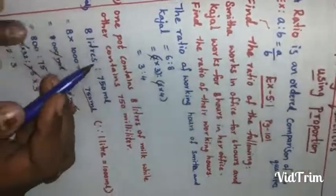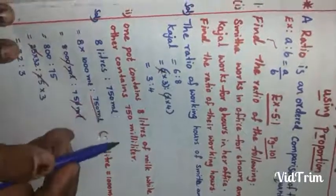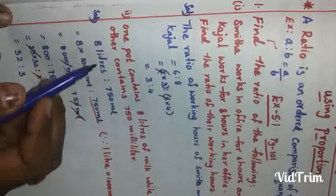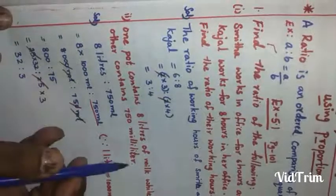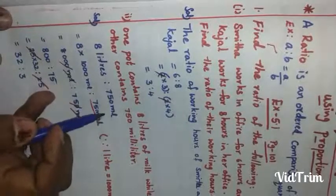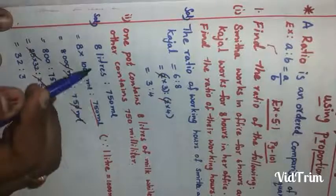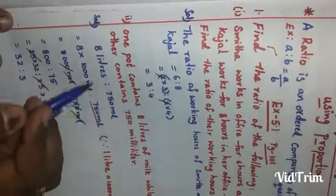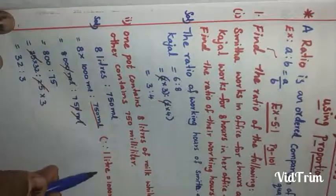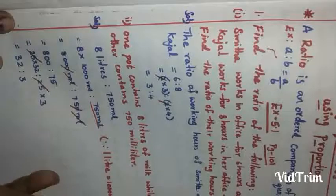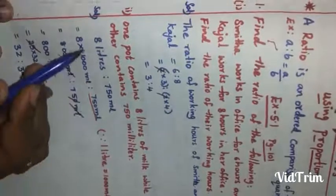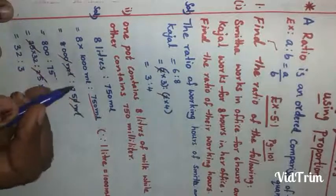Next: one part contains eight liters of milk while the other part contains 750 milliliters. Find the ratio of milk. Eight liters is to 750 milliliters — but they are not in the same units. We need to convert liters into milliliters. One liter equals one thousand milliliters, so eight liters equals eight into one thousand milliliters.